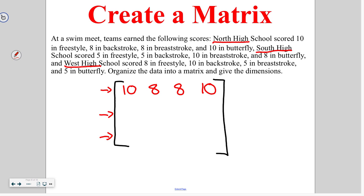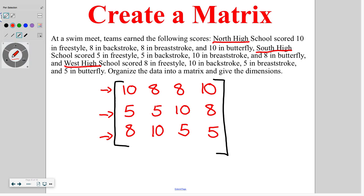All right, then we're going to do the exact same thing with South. Since freestyle was first for North, I want to make sure I list freestyle first for South. So five for freestyle, five for backstroke, ten for breaststroke, and eight for butterfly. And then I've got West eight for freestyle, ten for backstroke, five for breaststroke, and five for butterfly. So now I have my matrix drawn up. The last thing it asks us to do is state the dimensions. So I've got my three rows by my four columns. So this is again a three by four matrix.